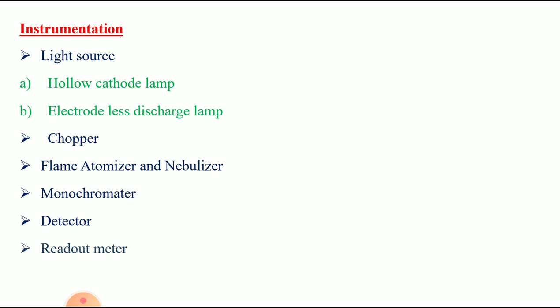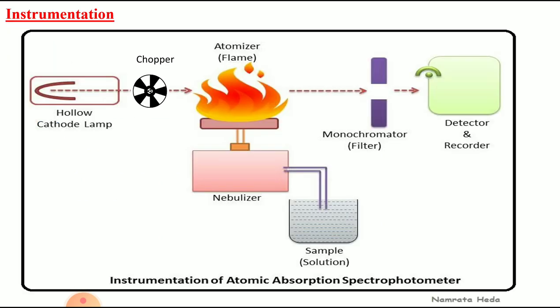In the instrumentation, there is a light source, chopper, flame atomizer and nebulizer, monochromator, detector, and readout meter. This is the schematic representation of the atomic absorption spectrophotometer. The sample in solution form goes to the nebulizer, where it is converted into fine droplets or aerosol form. These fine droplets are exposed to the flame and converted to atoms. Light from the hollow cathode lamp passes through the chopper, then reaches the flame where atoms absorb the radiation. The absorbed signal then goes to the monochromator and detector, which detects how much light is absorbed and transmitted, and the result reaches the readout device.